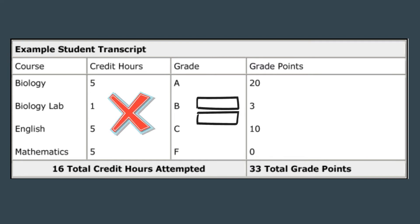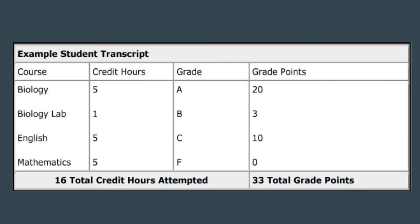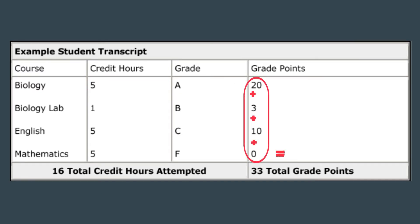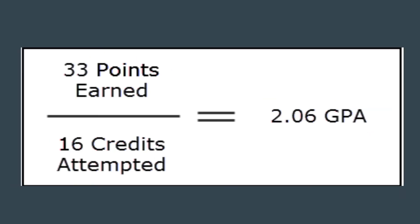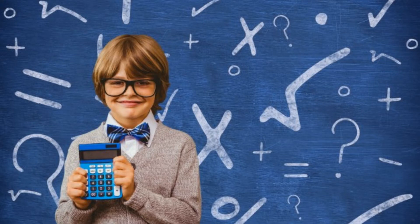Now suppose this is your report card. Multiply the credit of each subject by its grade point — for instance, 5 multiplied by grade A (which is 4) will give you 20. Sum up the scores and total credits — here the summation is 33 and 16 respectively. Using the GPA formula, dividing 33 by 16 gives you your GPA: 2.06. Simple, isn't it?